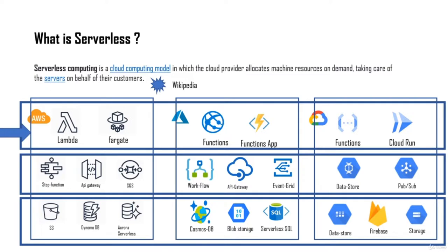When we think about serverless, we generally think about services like Lambda in AWS, Function App in Azure, or Cloud Functions in GCP. But that's not all — you can also include tools like SQS and SNS in AWS, or other application integration tools. Services like S3 and other storage-related capabilities also come under serverless. So serverless not only means compute like Lambda and Function, but also includes integration tools and storage.